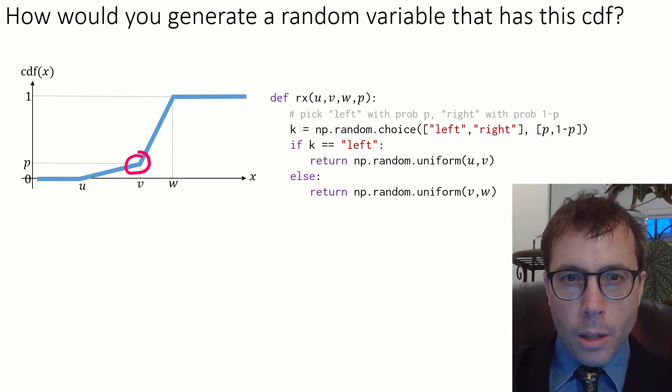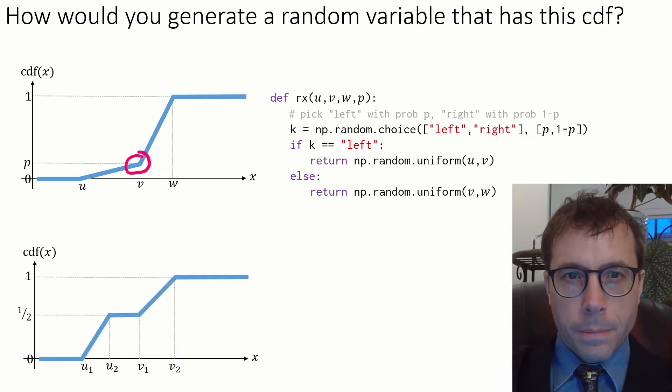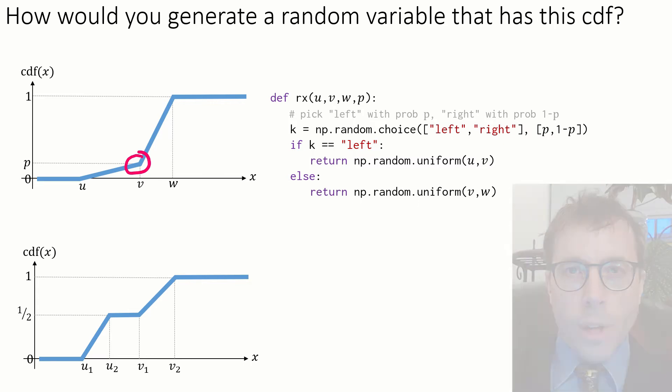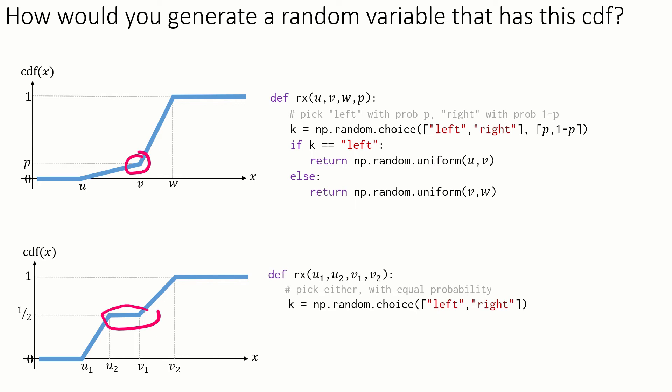Okay, once you're happy, let's go on to the next example. Here's another CDF. Let's break it down in the same way. First, decide if we want to be on the left part or the right part. The CDF tells me that the probability of each is a half. So it's just a simple call to np.random.choice. I don't even need to specify the probabilities.